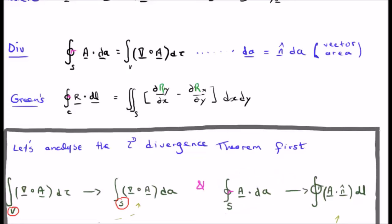We get the closed line integral of A dot dL where dL is the infinitesimal line segment but we use the unit normal n hat to make life easier and invoke the dot product A dot n hat dL.